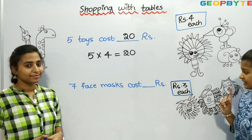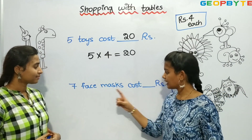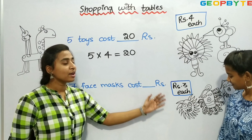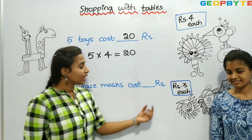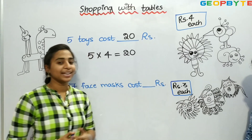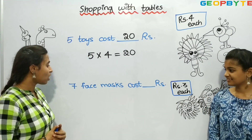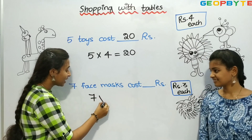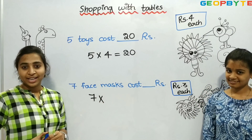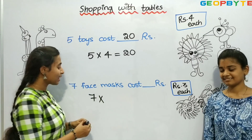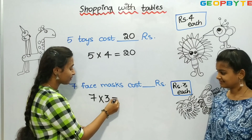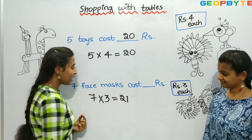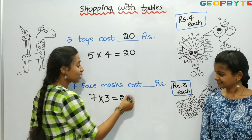Now, let us see the last one. 7 face masks cost dash rupees. Here we have some face masks, and each face mask costs rupees 3. We need to find out the cost of 7 face masks. So, 7 face masks into the cost of each face mask is Rs. 3 — that is 7 into 3. 7 threes are 21. So, 7 face masks cost Rs. 21.